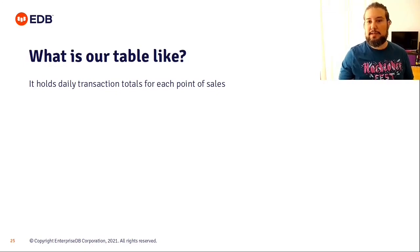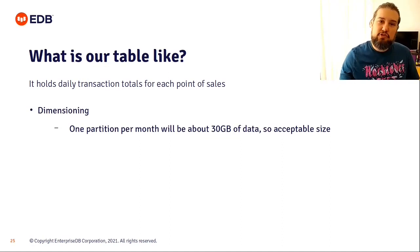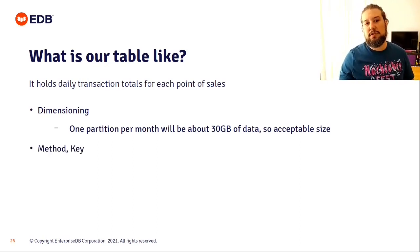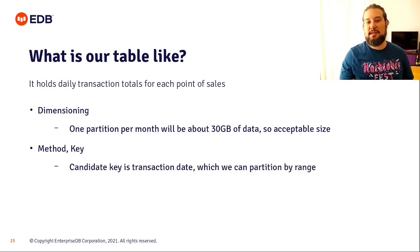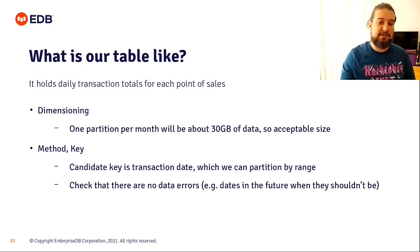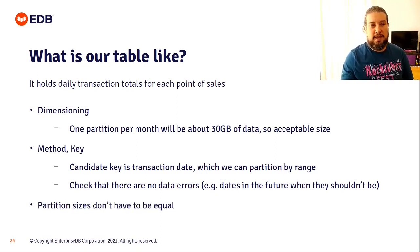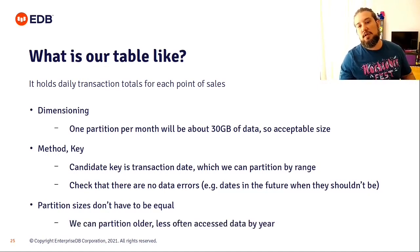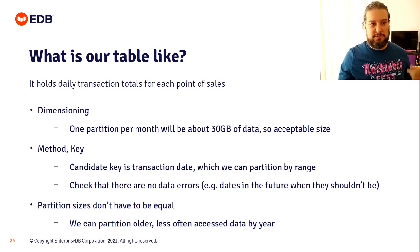Our table holds daily transaction totals for each point of sale. By performing dimensioning, we see that one partition per month would store about 30 gigabytes of data — acceptable, so we proceed. The best candidate key is probably transaction date, meaning we partition the table by range of transaction date. We need to make sure there are no unexpected values such as dates in the future. Partition sizes don't have to be equal either — we can partition older, less frequently accessed data by year instead of by month.